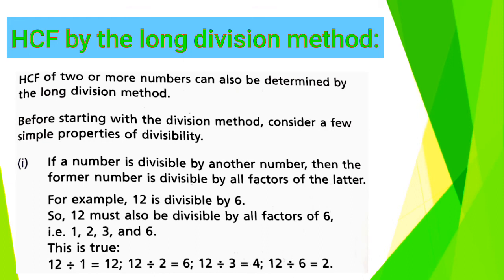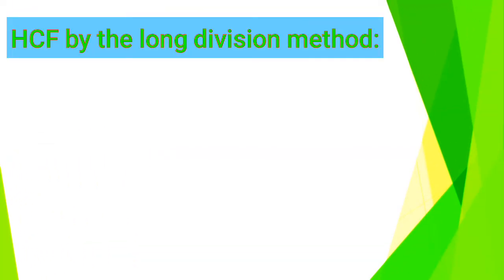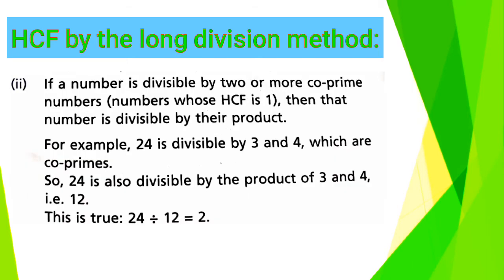Then property number 2: If a number is divisible by 2 or more co-prime numbers—numbers whose HCF is 1—then that number is divisible by their product. For example, 24 is divisible by 3 and 4, which are co-primes. Co-primes mean that in the 2 or 3 given numbers, the HCF of the given numbers should be 1, not except 1.